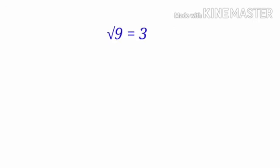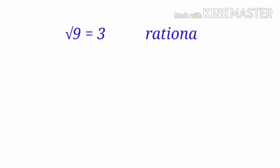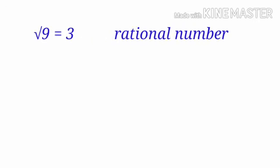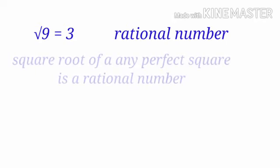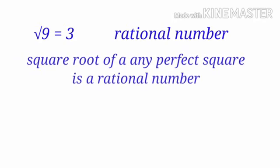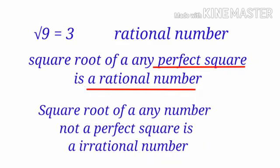But wait, the square root of 9 equals 3. It is a rational number. In fact, the square root of any perfect square is a rational number. But the square root of any number that is not a perfect square is an irrational number.